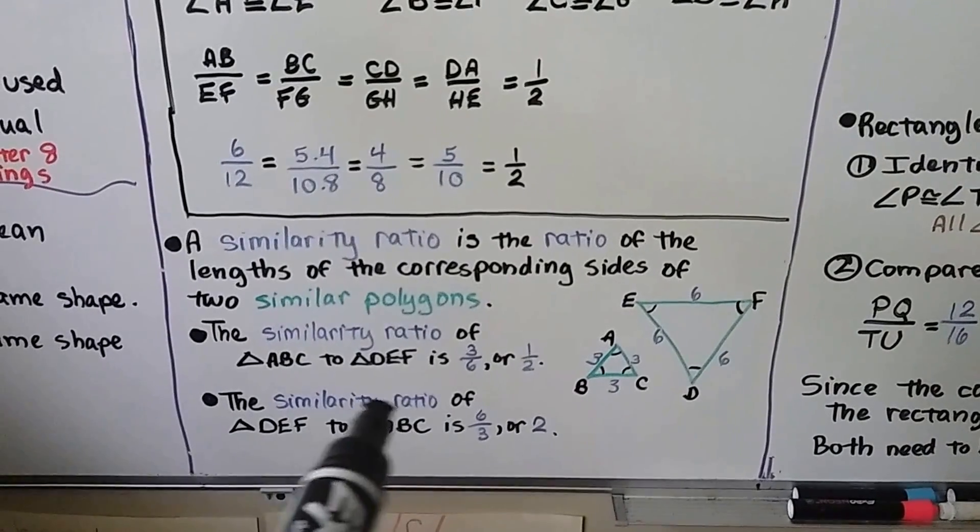In describing similar polygons, we can identify the pairs of congruent angles and corresponding sides. We've got triangle XYZ and triangle QRS. We can see that this angle is congruent to this one and this angle is congruent to that one. Angle Z is congruent to angle R, angle Y is congruent to angle Q, and by the third angles theorem, X has to be congruent to S. They have the same measure.